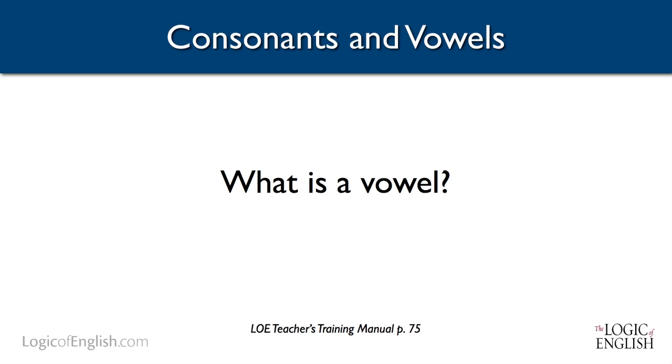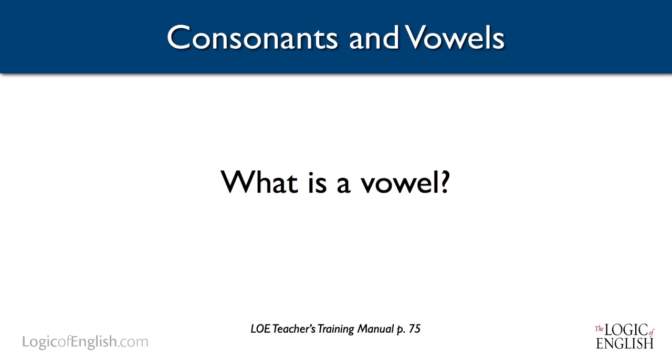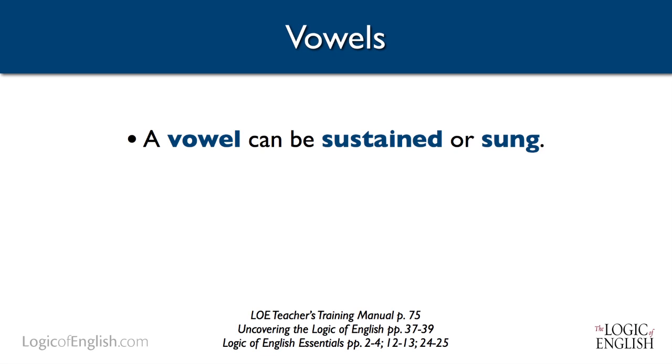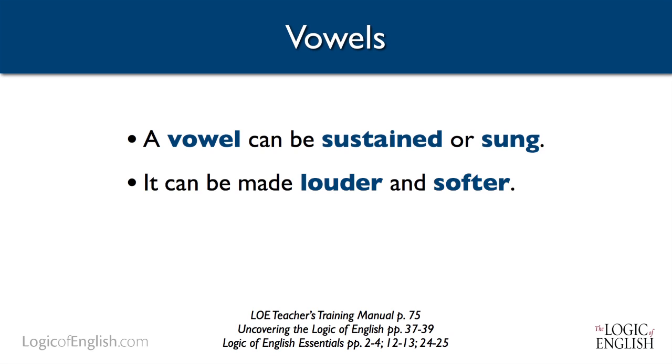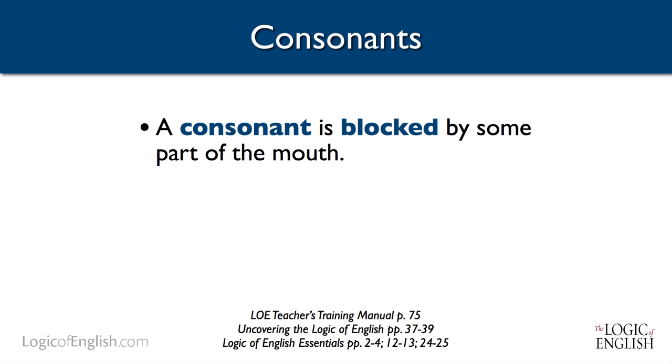Consonants, vowels, and syllables. Let's begin by asking a question: what is a vowel? Many of you are probably thinking A, E, I, O, U — and sometimes Y. In fact, I speak around the nation to educators and parents and I find it fun to have everyone recite this together because it's common cultural knowledge. But as we said earlier, this is a real oversimplification of the language. It's much better than rotely memorizing an oversimplification to understand what a vowel actually is. A vowel is a sound that can be sustained or sung. It can be made louder and it can be made softer. Vowels are also spoken with an open mouth — they have an open position. Now let's contrast this to a consonant: a consonant is a sound that is blocked in some way by the mouth, by the teeth, by the tongue, by the lips. It is a blocked sound.